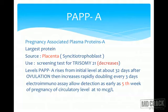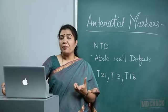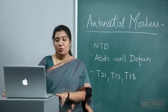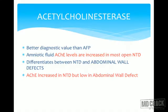PAPP-A (pregnancy-associated plasma protein A) is the largest protein, sourced from the placenta or trophoblast. It is used as a screening test for trisomy 21; its levels decrease in trisomy 21 compared to normal pregnancy. PAPP-A levels rise from about 32 days after ovulation and double every three days. Electroimmune assay allows detection as early as the fifth week. Its sensitivity is very high, making it valuable in chromosomal defect screening.